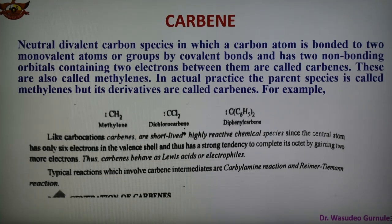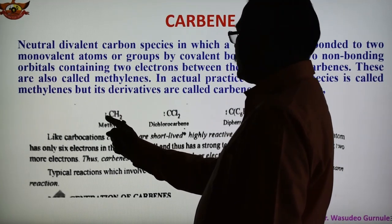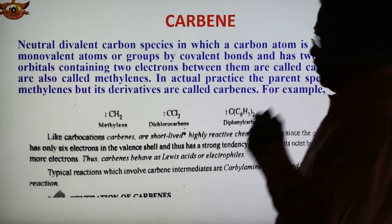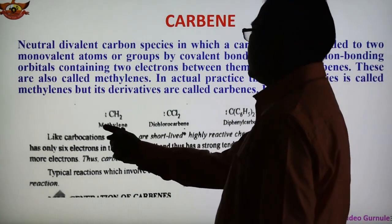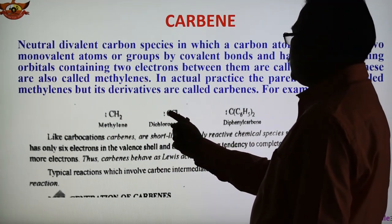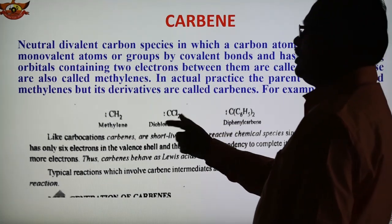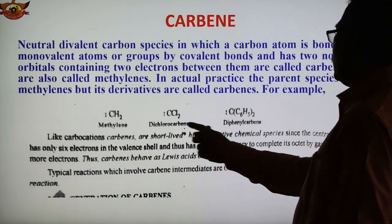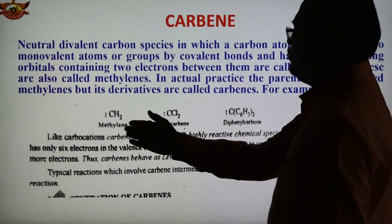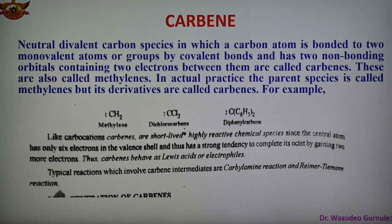Carbene, which has 2 electrons and 2 covalent bonds, is also called methylene because the parent species is methylene, CH2. In its derivatives it is commonly known as carbene. So the parent species is methylene: a carbon having 2 electrons and 2 covalent bonds with hydrogen. The derivative CCl2 is dichlorocarbene, and diphenyl carbene are examples of carbene. Carbene has 2 electrons and 2 bonds, and is a highly reactive species.